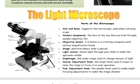The coarse adjustment knob is the bigger knob. This is used to raise and lower the stage in order to focus your specimen to begin with. Once you see your specimen, you can use the smaller knob called the fine adjustment knob in order to make slight focusing adjustments.